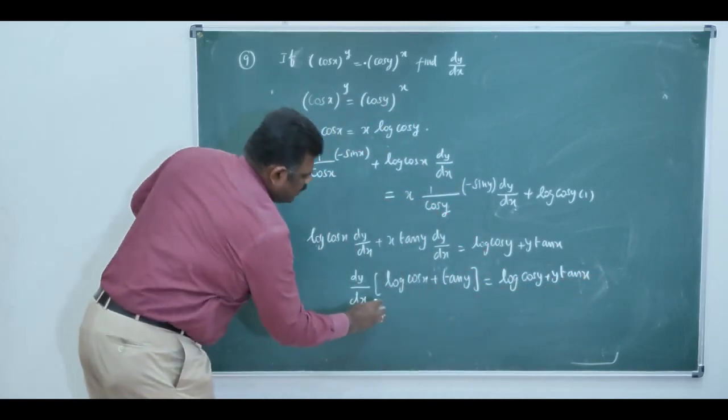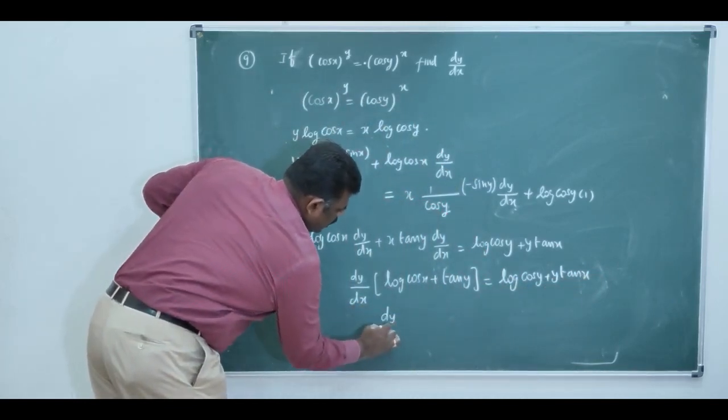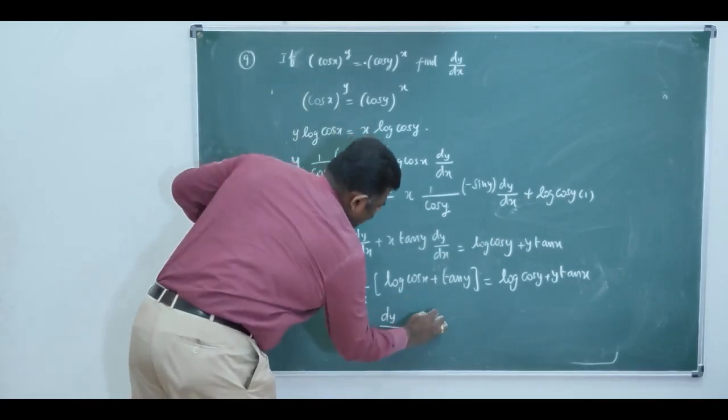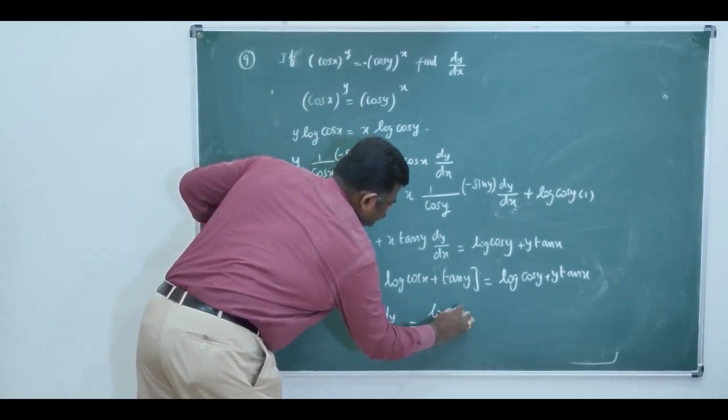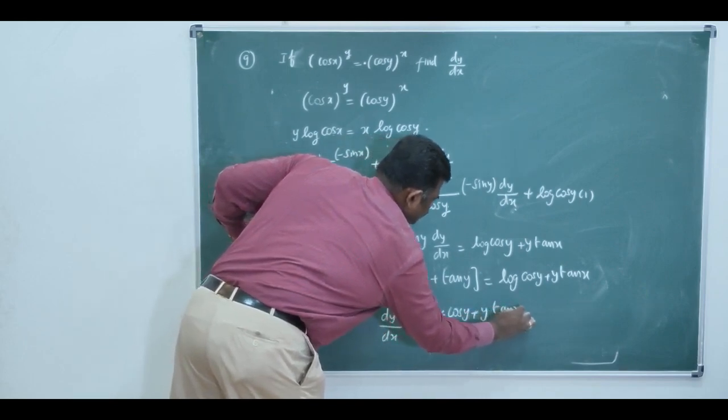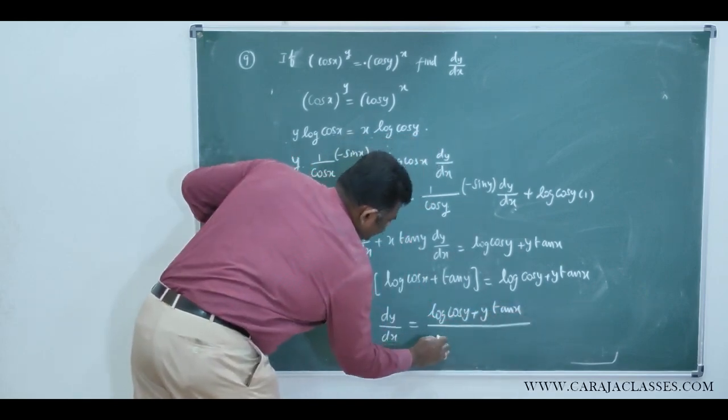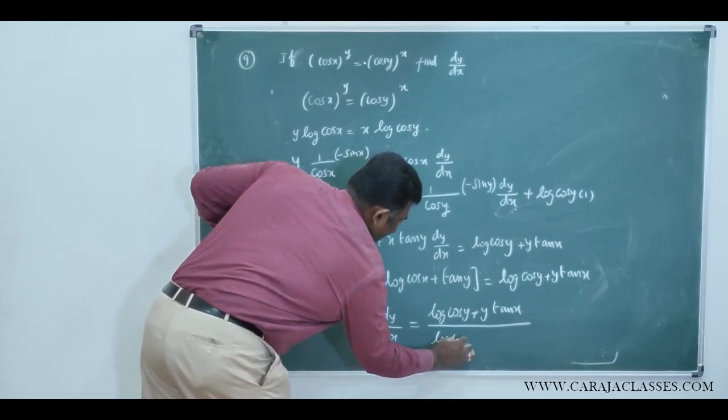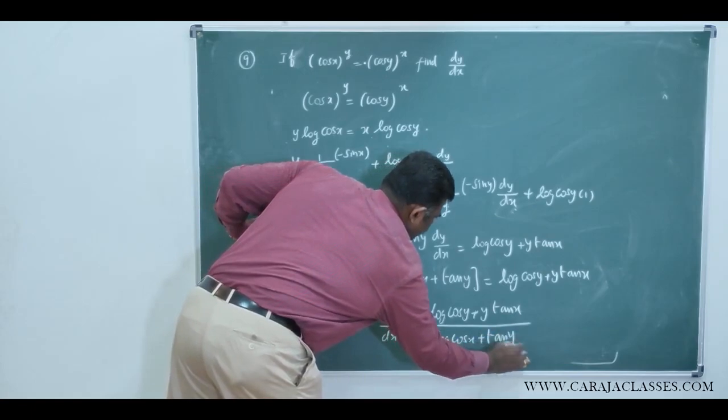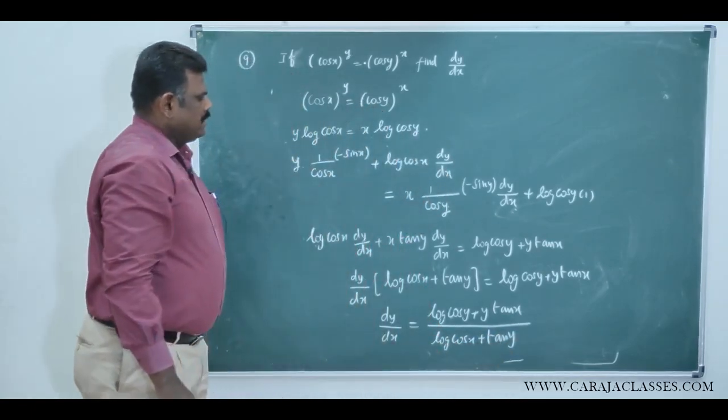We want only dy by dx. So, dy by dx equal to log of cos y plus y into tan x by denominator log of cos x plus x tan y. So, this is dy by dx.